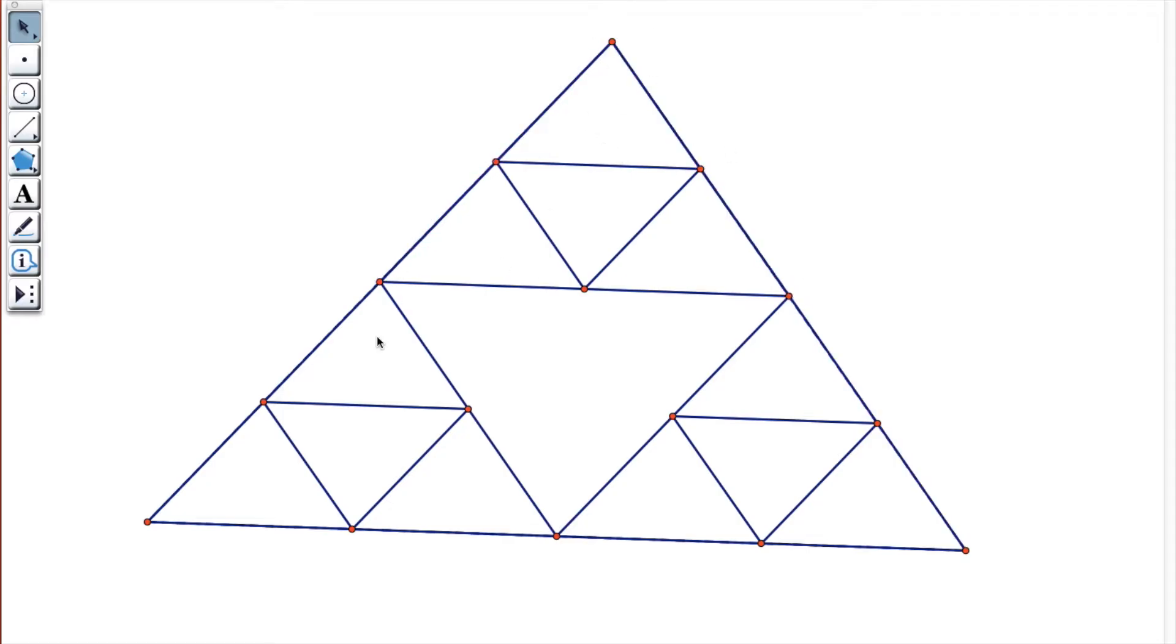For the third iteration, you once again identify the midpoints of these new triangles, and then you connect the midpoints to break those triangles into four smaller triangles of equal area.